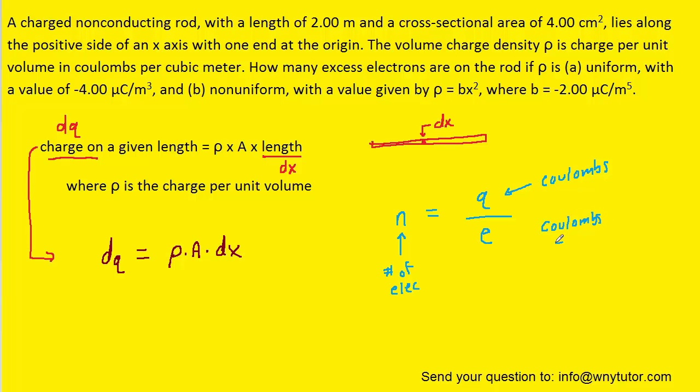So if we did a little dimensional analysis here, on the right side we would have coulombs divided by coulombs per electron. The coulombs would cancel, this electron would actually flip up to the numerator, and indeed we would get a unit of electrons. That's what we're trying to establish is this relationship to give the number of electrons, which again is simply the charge divided by e.